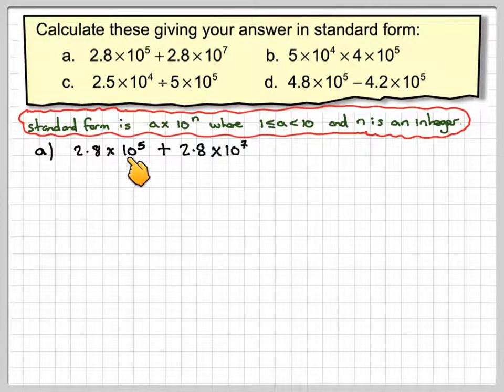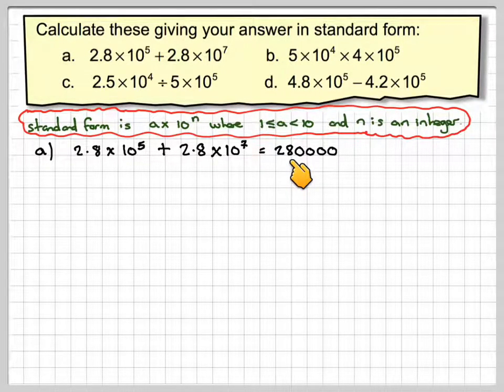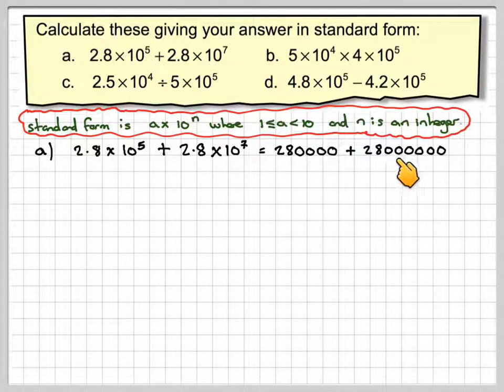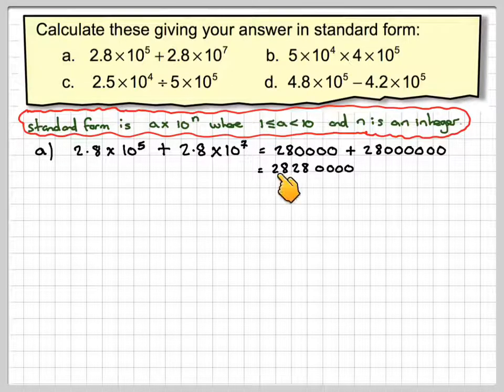So we've got 2.8 times 10 to the 5 plus 2.8 times 10 to the 7. As an ordinary number, this will be 280,000, so we'll move the decimal point 5 places that way. And this will be 28,000,000, so we'll move the decimal point 7 places that way. If you add those together, you're going to get 28,280,000.